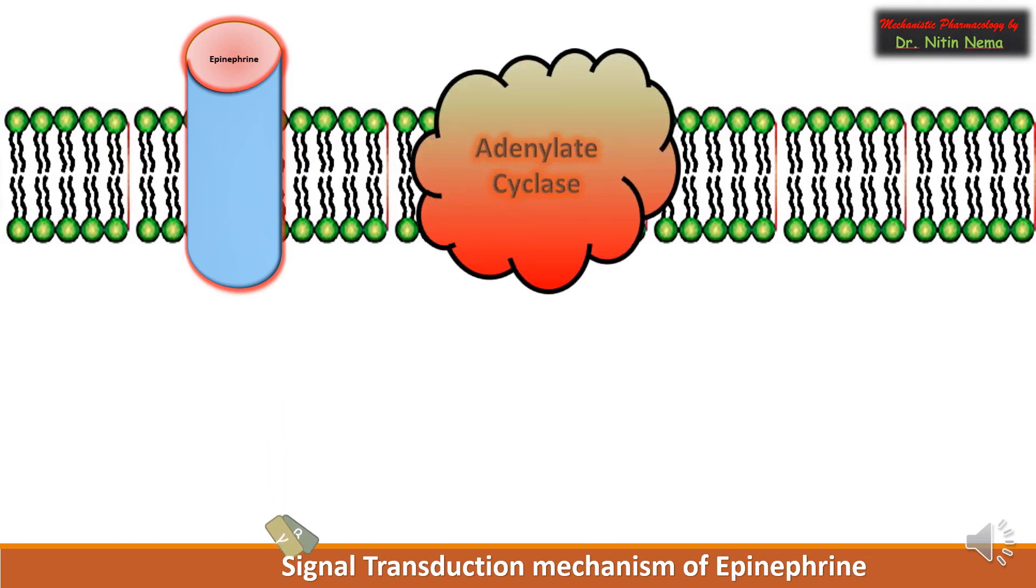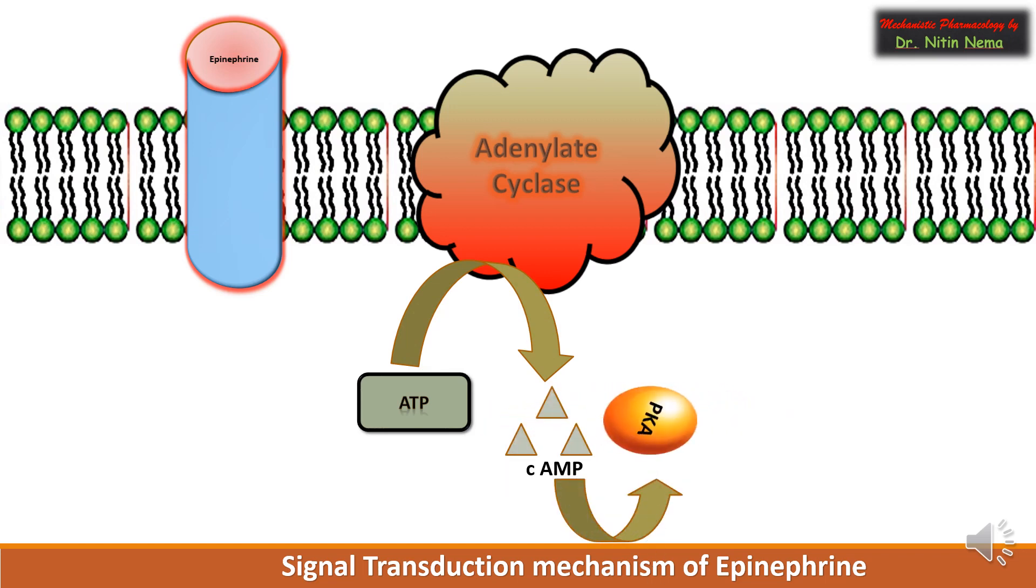The activated enzyme converts adenosine triphosphate molecules into cyclic AMP as second messenger. Importantly, this cyclic AMP is called second messenger because it carries the message of the first messenger, that is epinephrine, into the cell.